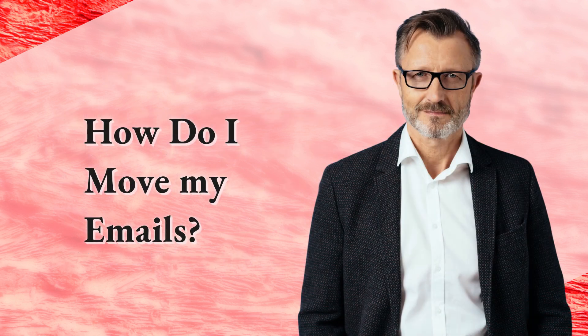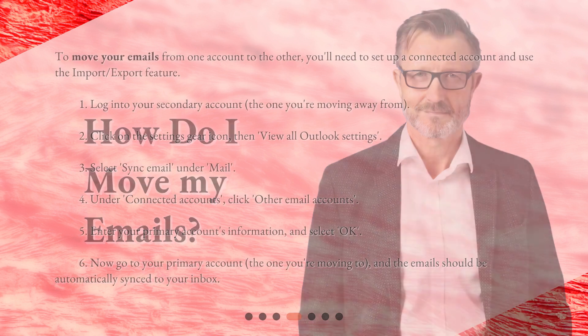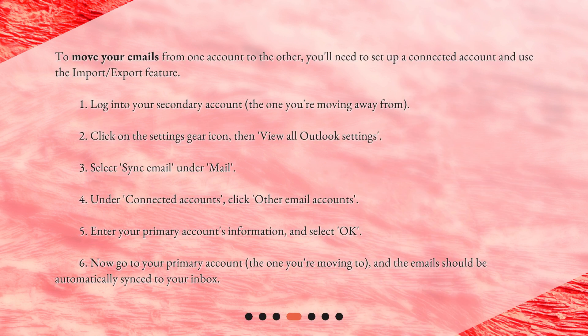How do I move my emails? To move your emails from one account to the other, you'll need to set up a connected account and use the import-export feature. Step 1: Log into your secondary account, the one you're moving away from. Step 2: Click on the settings gear icon, then view all Outlook settings. Step 3: Select Sync Email under Mail.